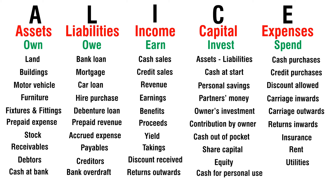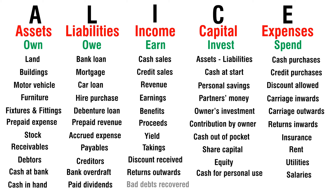Cash for personal use — invest. Salaries — spend. Cash in hand — own. Paid dividends — owe. Bad debt recovered — earn. Drawings — invest. Bad debt — spend.